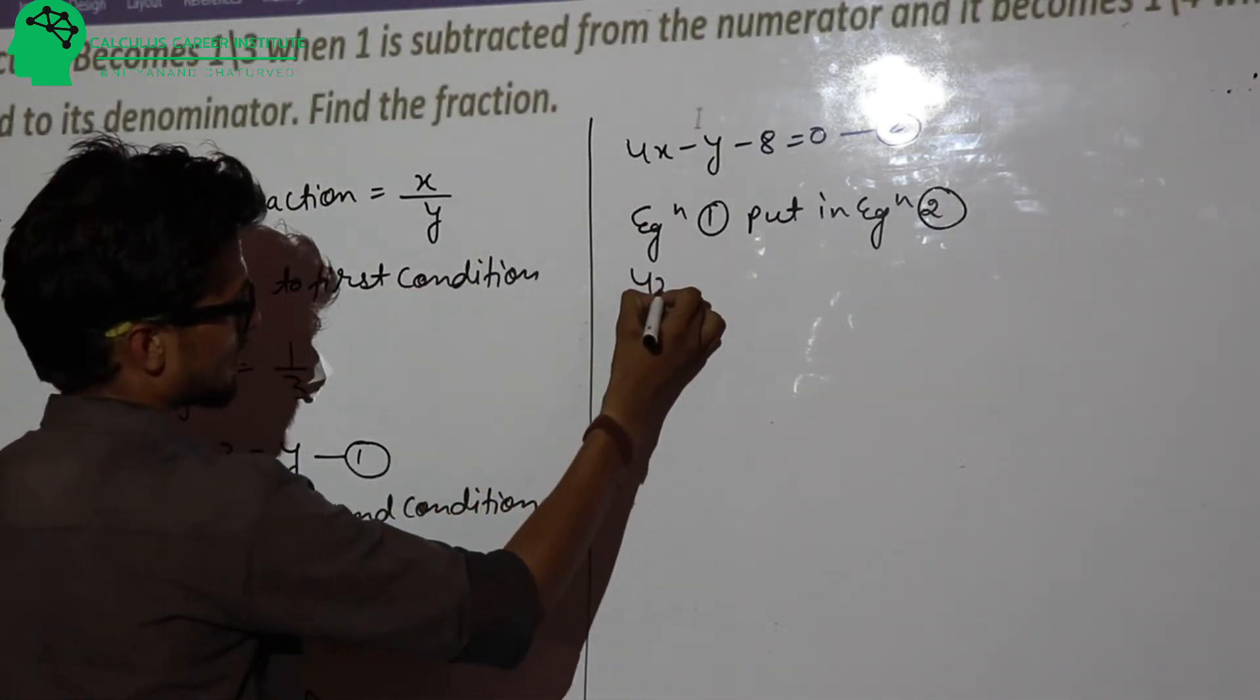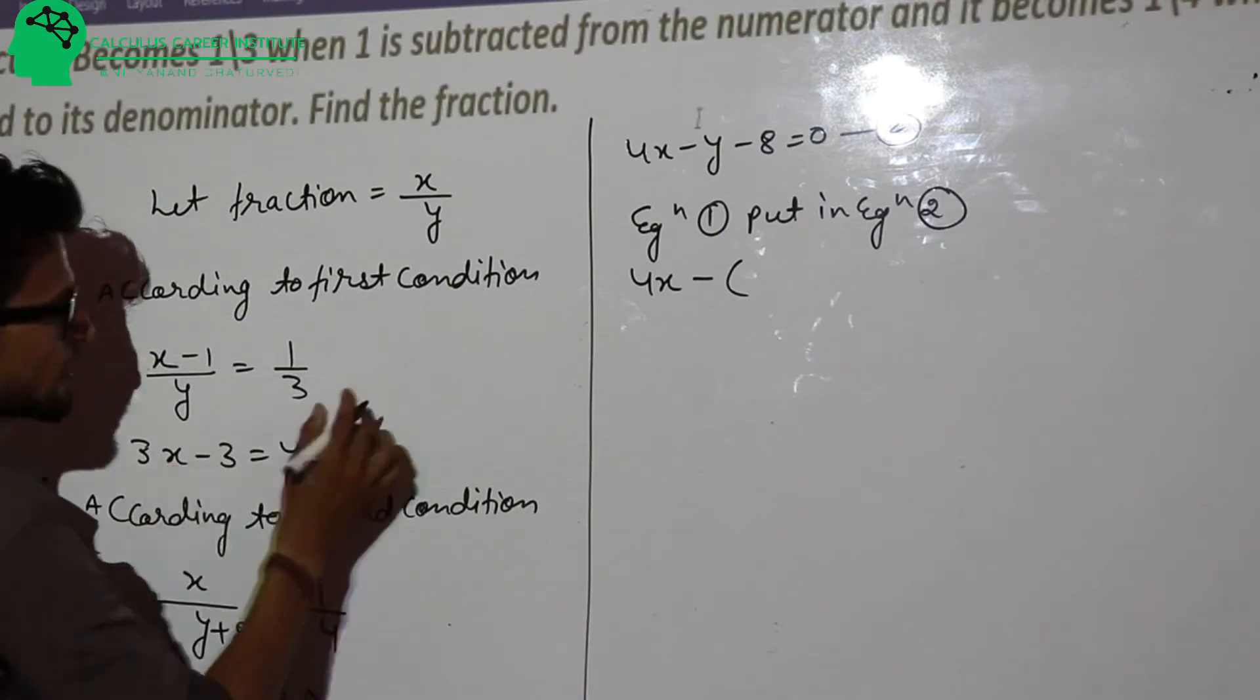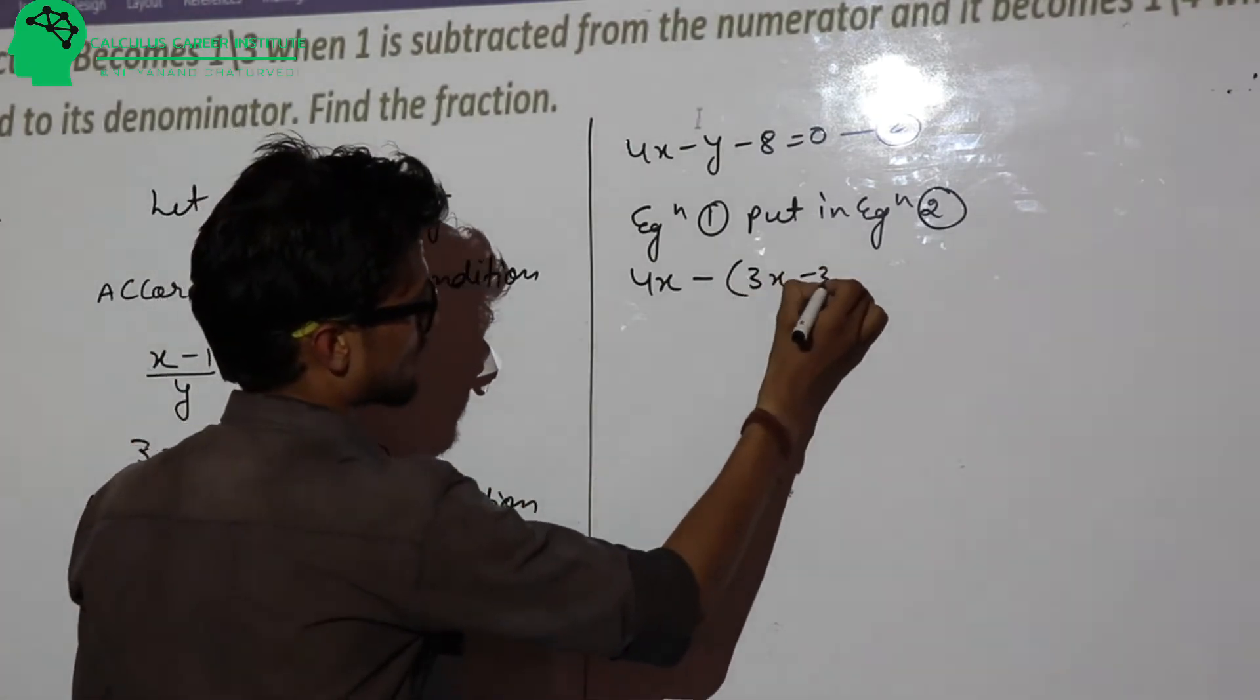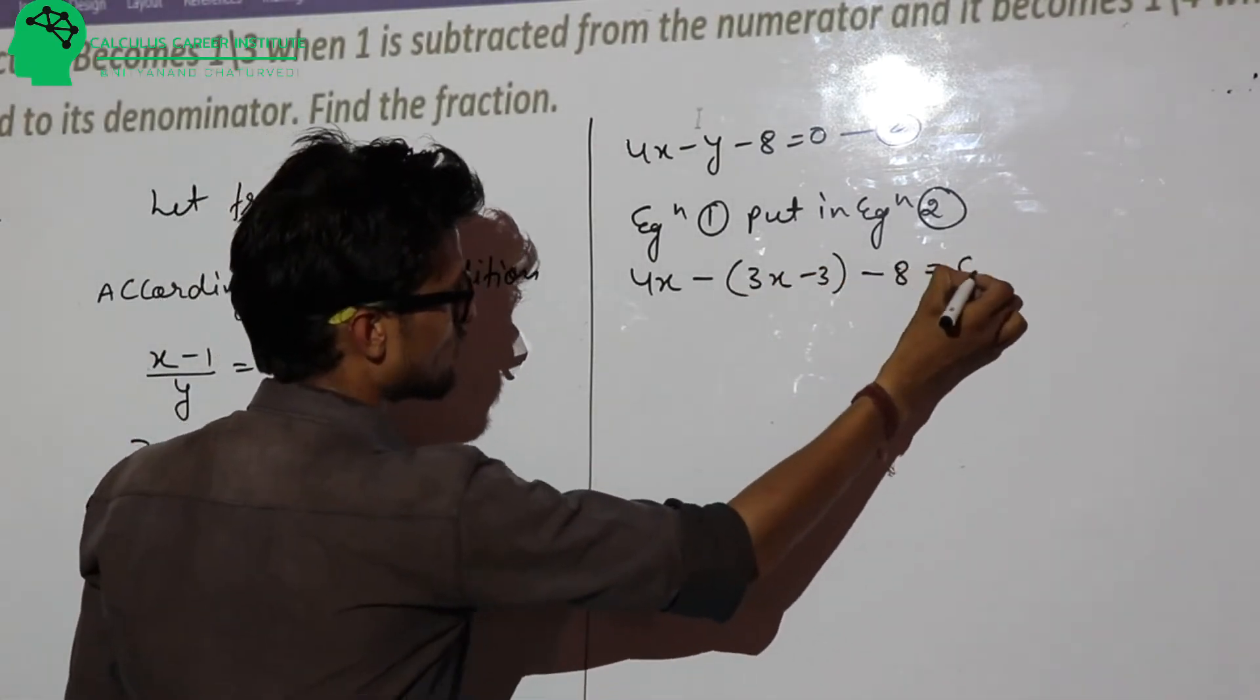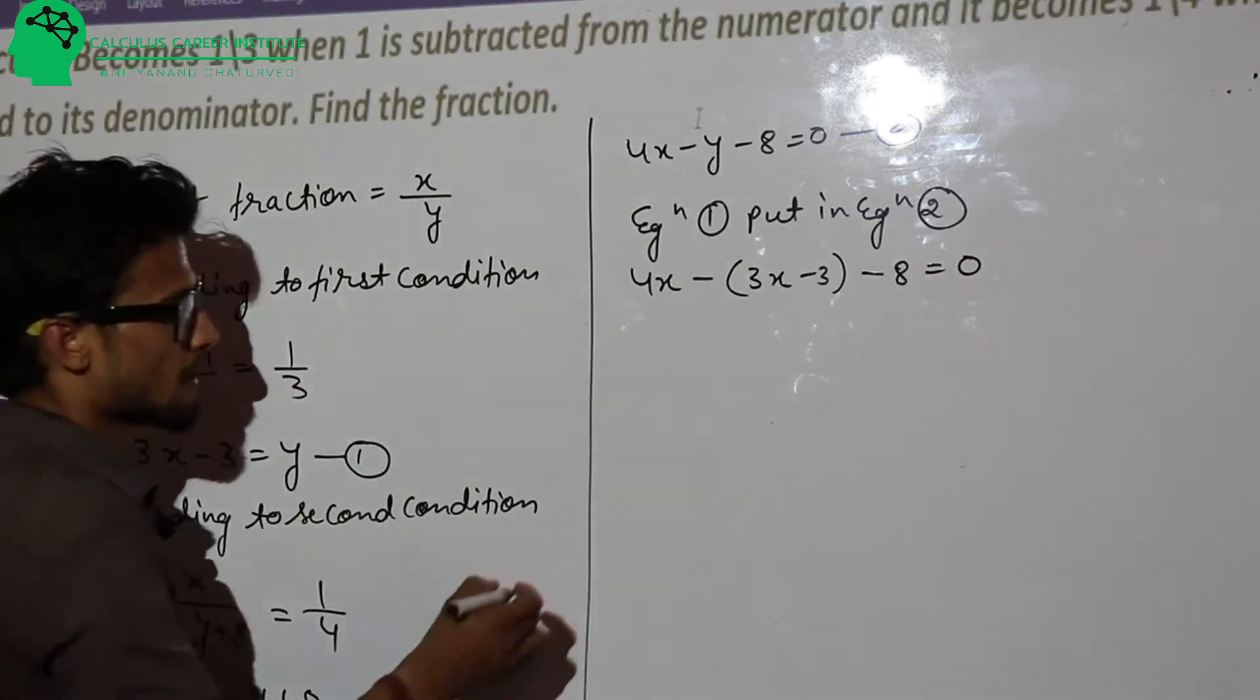When we substitute, we have 4x minus, y is 3x minus 3, minus 8 equal to 0.